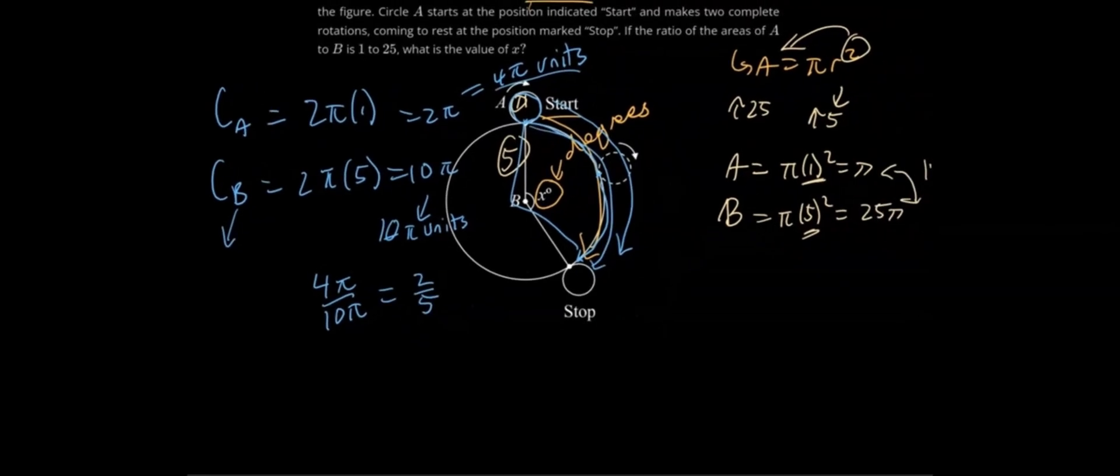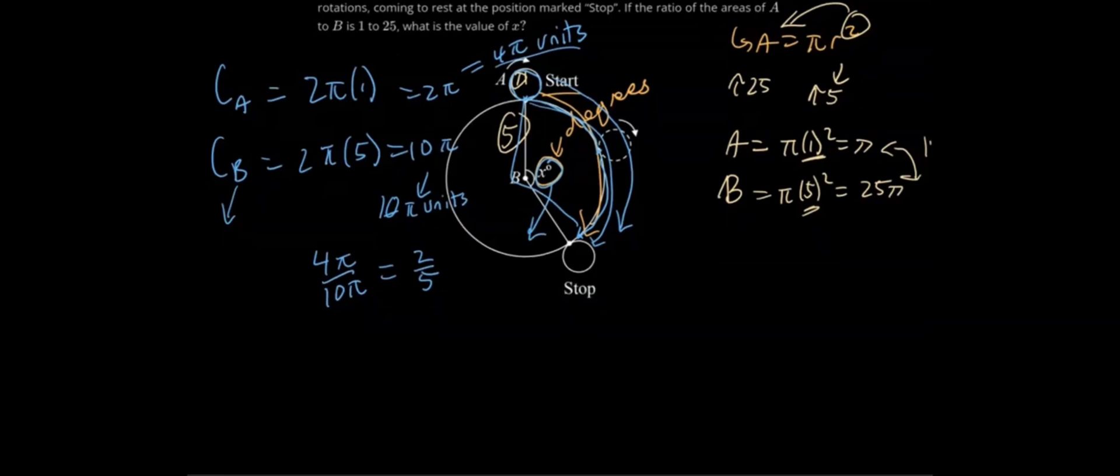The π is canceled. We get 2/5. So 2/5 of 360 degrees. Because our degrees are always, we always need to have a ratio of 360 degrees in a full triangle. So we're around 2/5. How many degrees would that be?